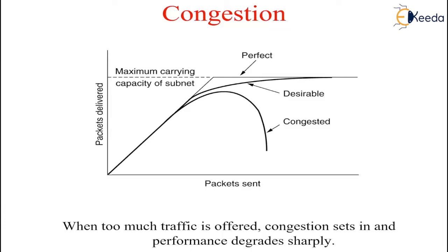Flow control, in contrast, relates to the point-to-point traffic between a given sender and a given receiver. Its job is to make sure that a fast sender cannot continually transmit data faster than the receiver is able to absorb it. Flow control frequently involves some direct feedback from the receiver to the sender. For example, suppose a fiber optic network with a capacity of 1000 gigabits per second, on which a supercomputer is trying to transfer a file to a personal computer which runs at 1 Gbps. Although there is no congestion, flow control is needed to force the supercomputer to stop frequently and give the personal computer a chance to breathe.